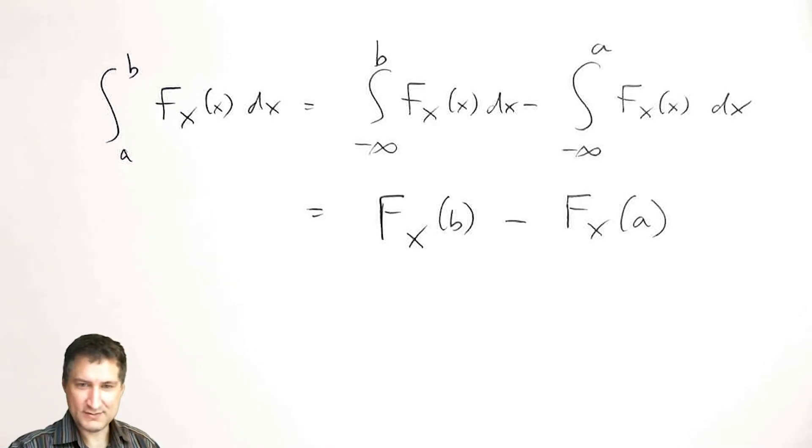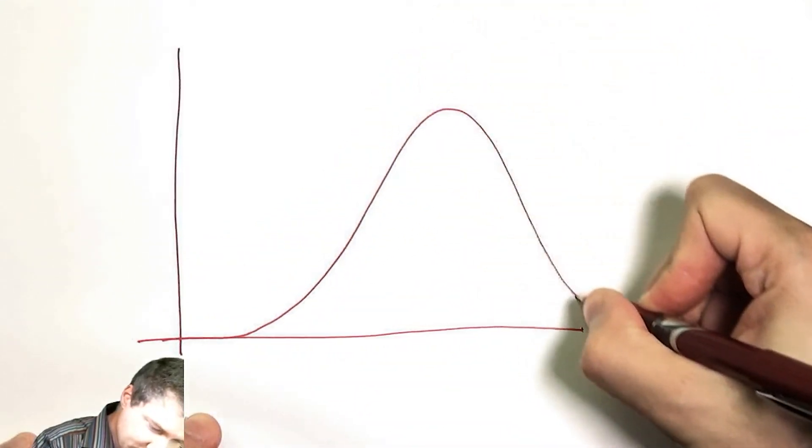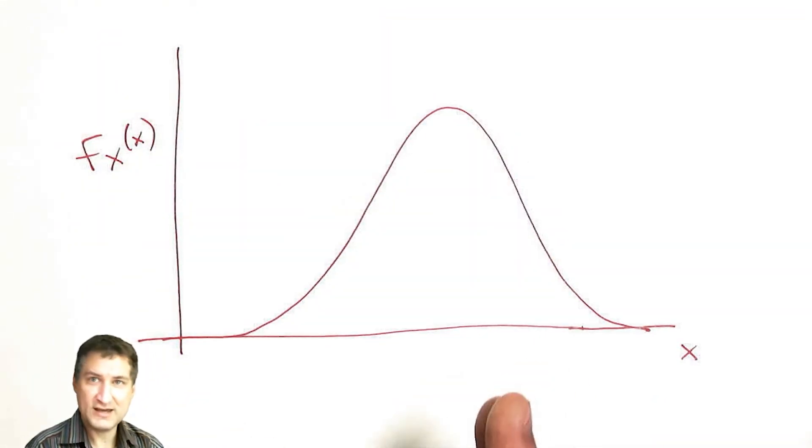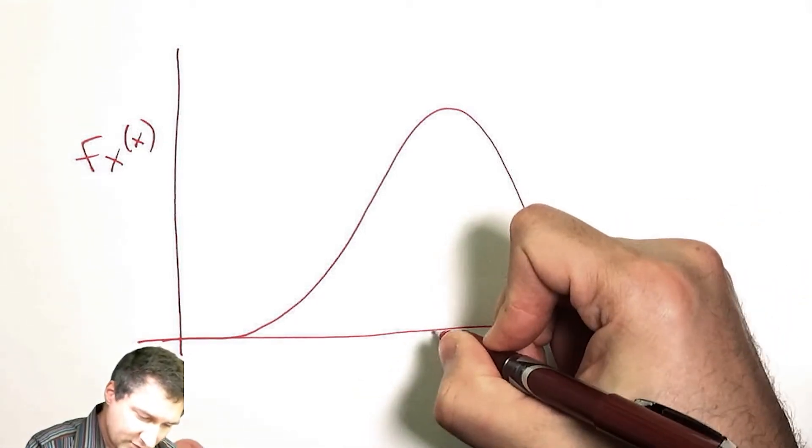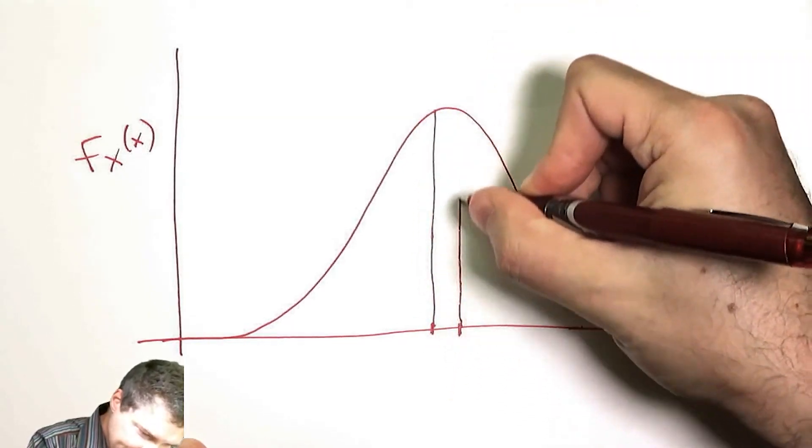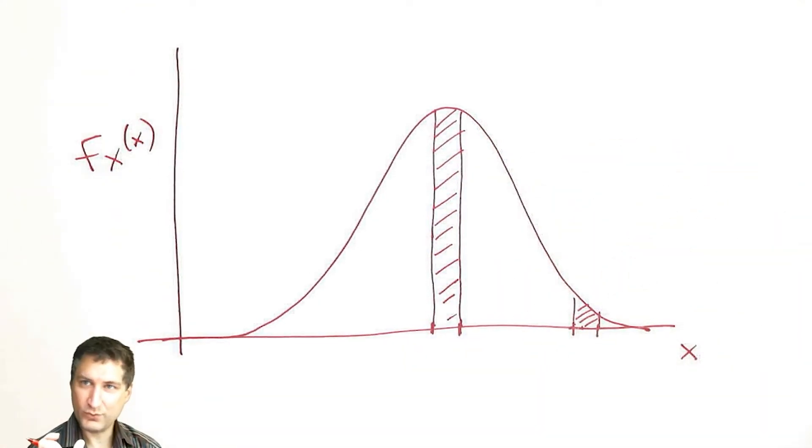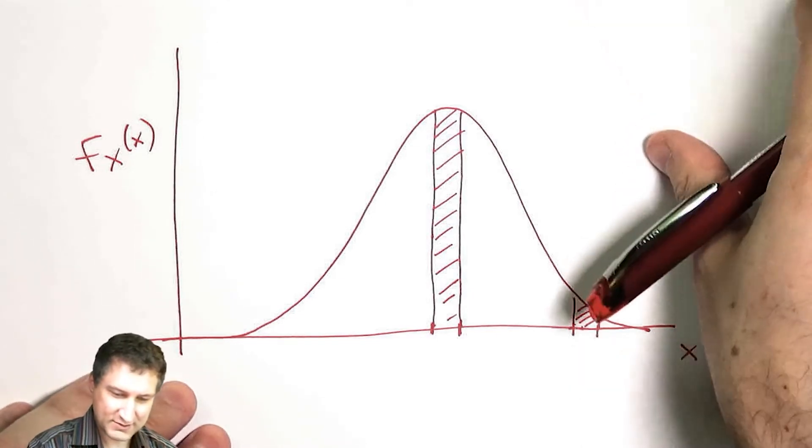So why do we care about the PDF? Looking at the PDF gives us some sense of how much probability is going on in any particular interval. We think about it like a density. Let's suppose that I have a PDF that looks like this. Basically, if the PDF is high around a certain value, that means that values around there are more likely to get. I can see that this interval, if I were to integrate this amount under the PDF, would have higher probability than this interval over here even though they may be the same width. Where the PDF is peaked, that's where the probability is.